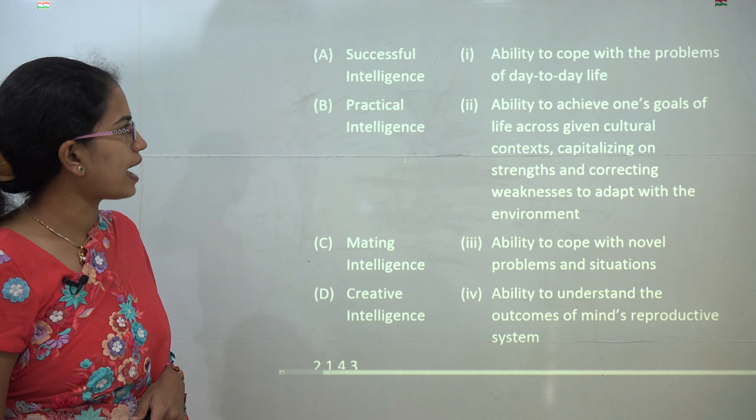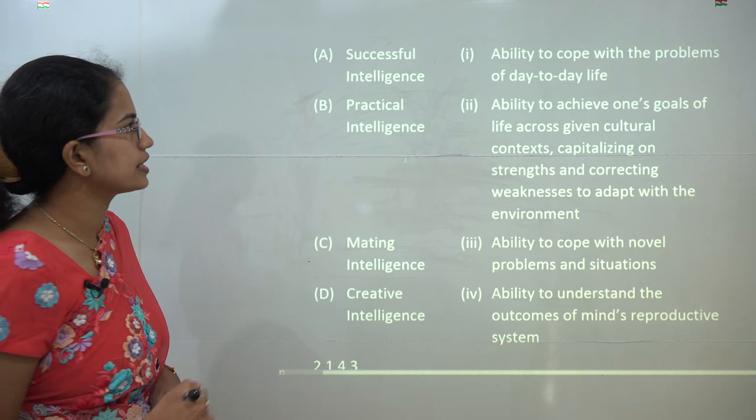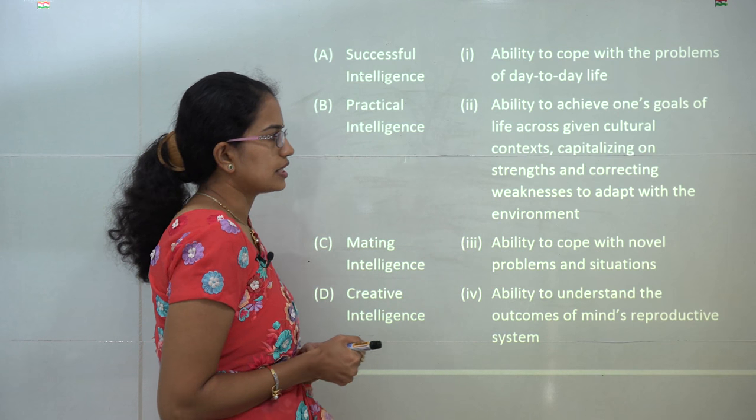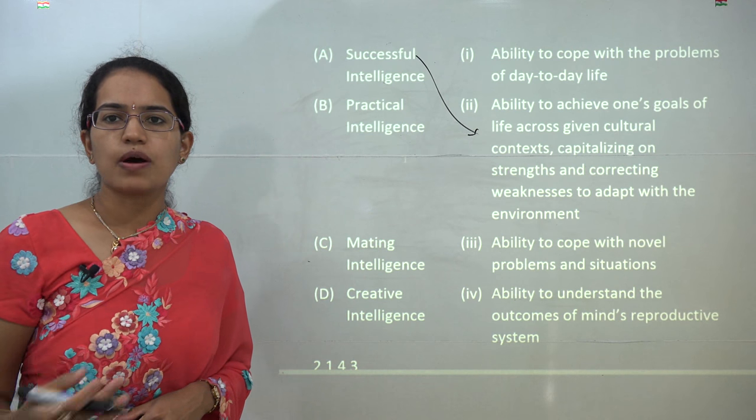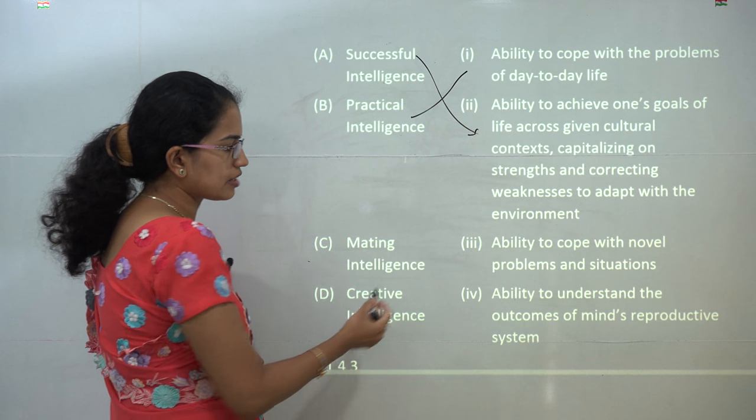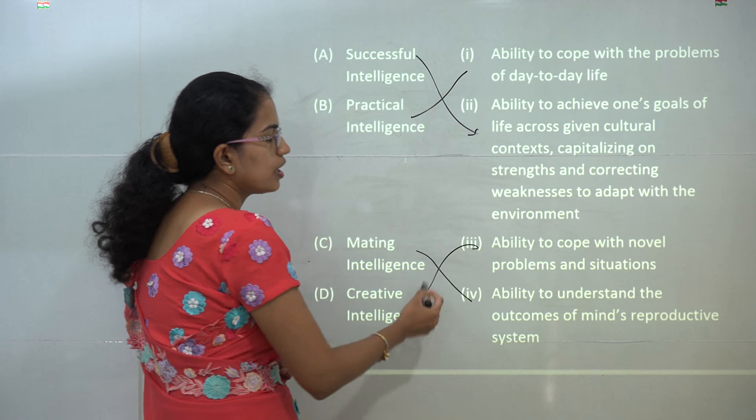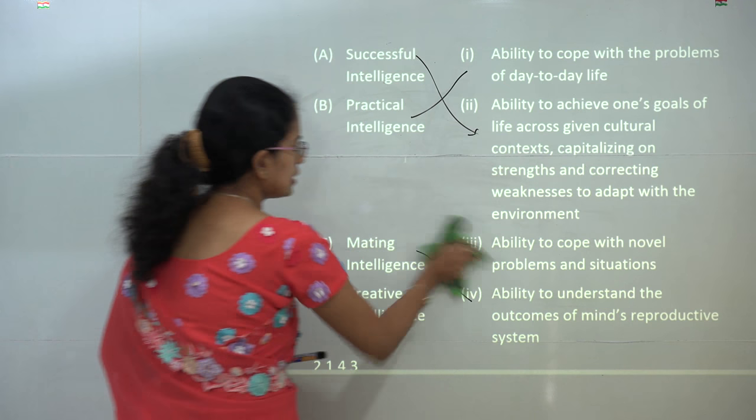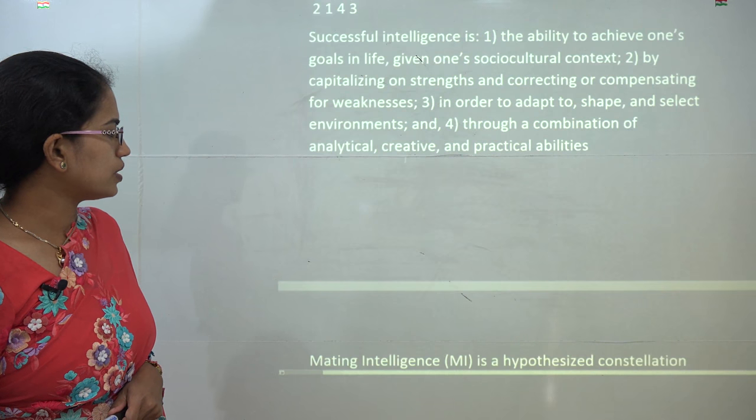Now next, you have to match the correct definition with the correct words. So you have successful intelligence that talks about the ability to achieve one's life goals based on the cultural concepts and strengths. Practical intelligence talks about handling day-to-day situations, so that's what is practical intelligence. Mating talks about mind's reproductive system, and creative talks about having unique ideas to deal with situations. So those are the correct matches for this question.